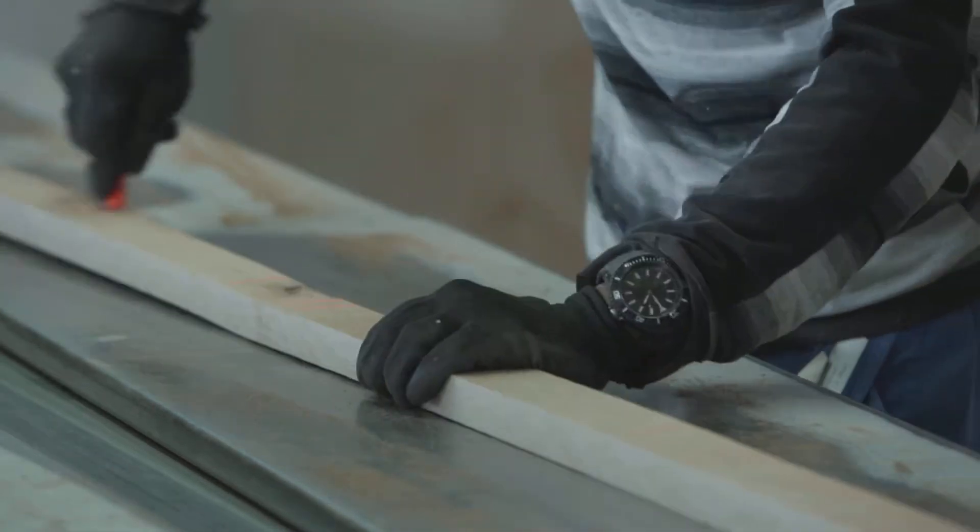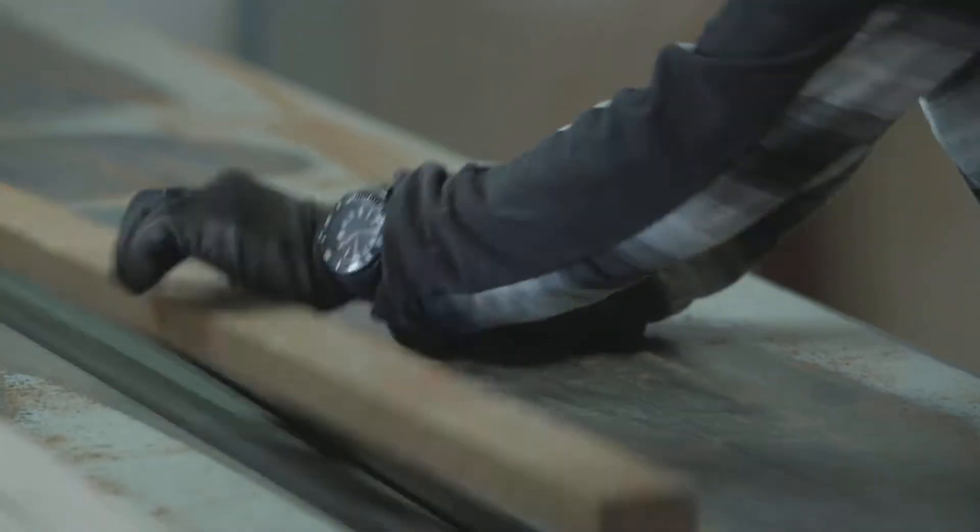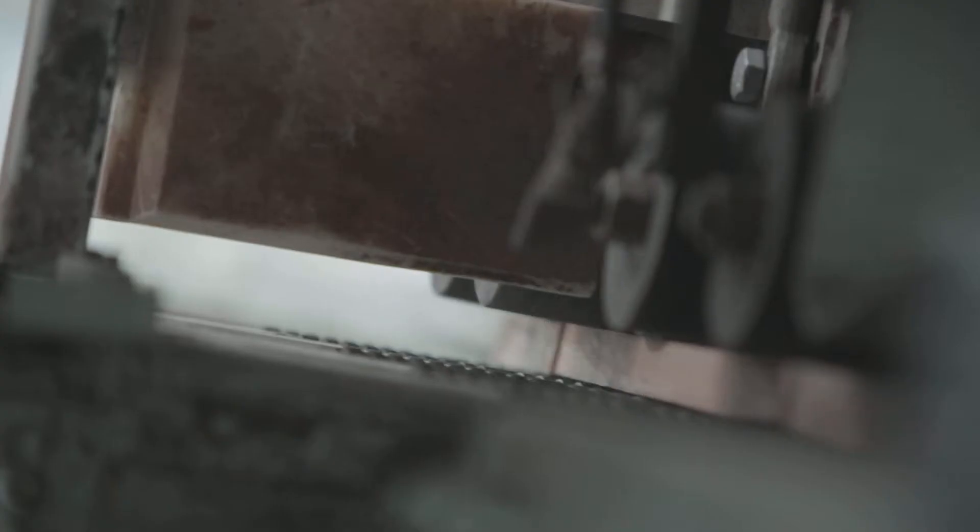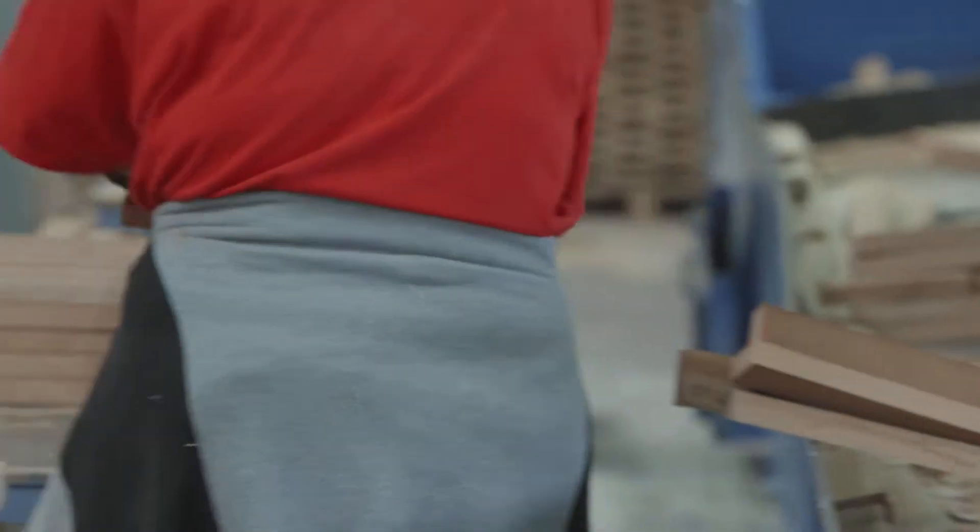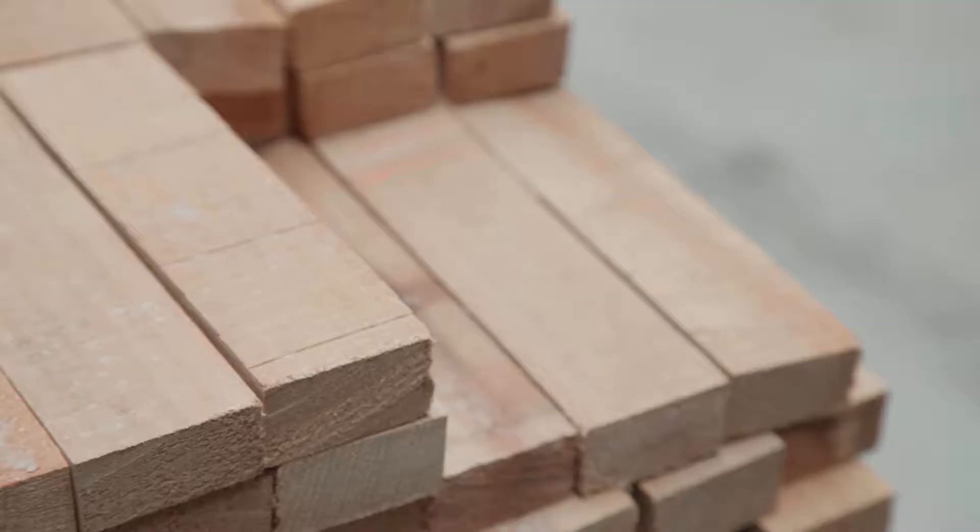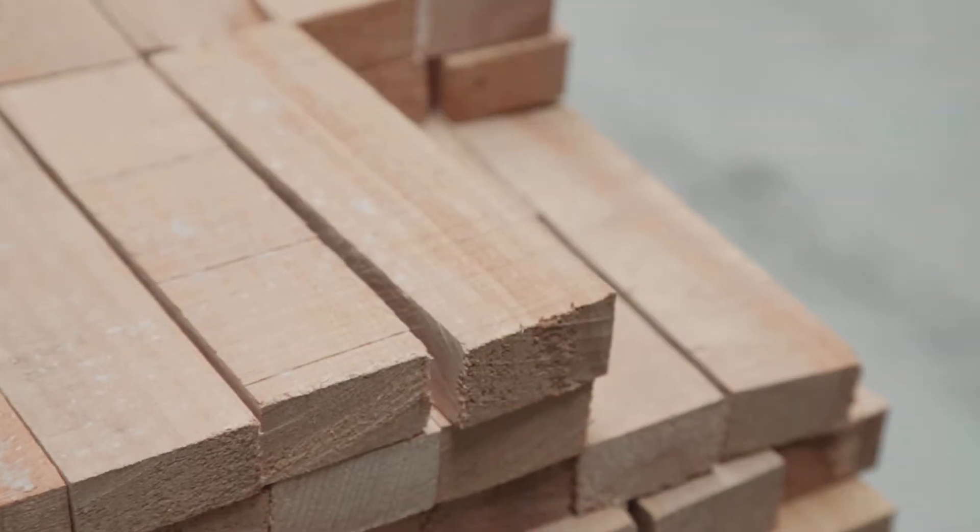Material not used for timber moves to the second stage where strips are produced. Again, the sawmill staff evaluates the material and they decide what type of product should be made from the particular piece of wood. Thus, the human factor plays a large role in production yield and value.